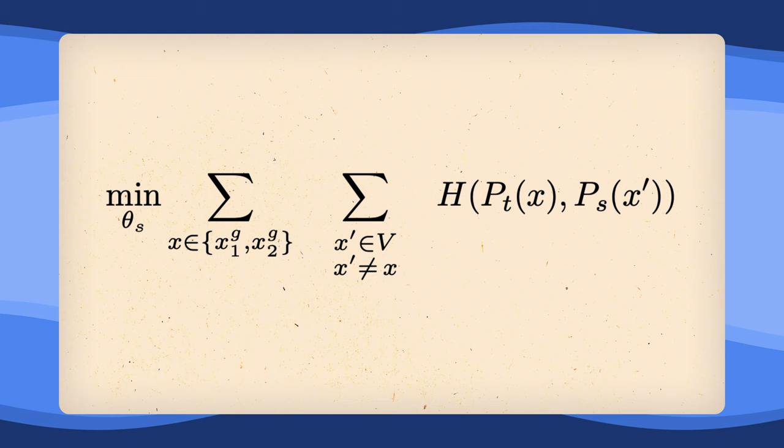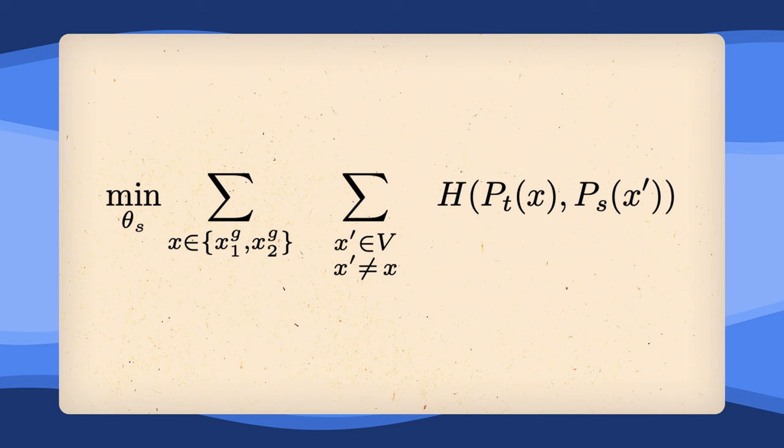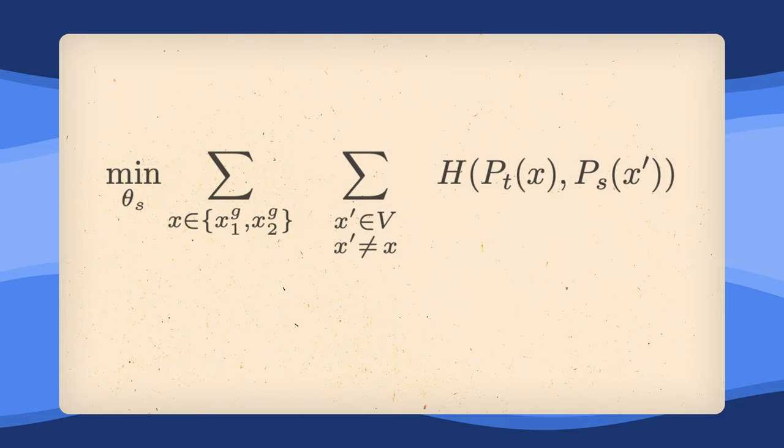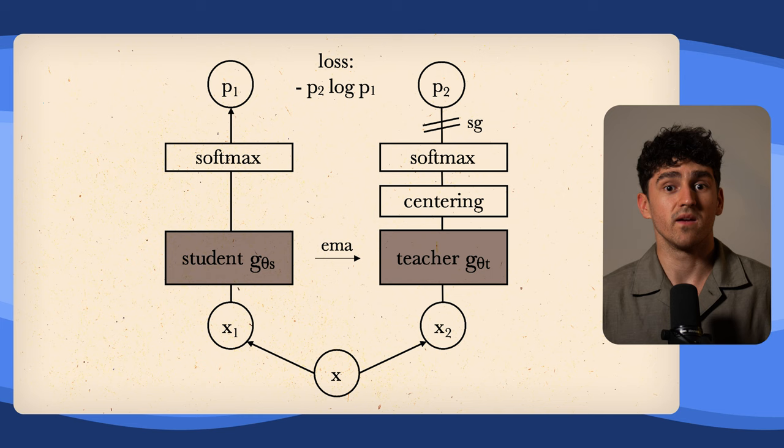We already talked about the two cropping cases in the SimCLR video, where we have two adjacent views and the here enforced case of local and global views. Apparently, the model learns better when learning to look at smaller parts of a bigger object.